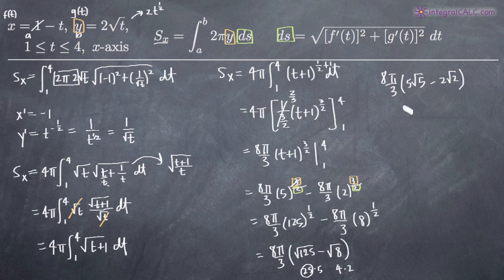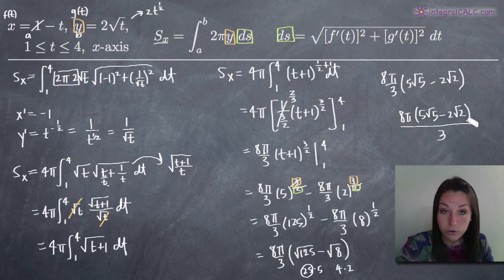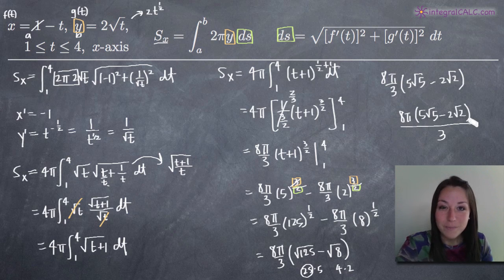Putting everything over three, our final answer is eight pi times five square root of five minus two square root of two, all over three. That answer represents the surface area of revolution found by revolving the parametric curve around the x-axis on the range t equals one to t equals four. I hope that video helped you guys, and I'll see you in the next one. Bye!